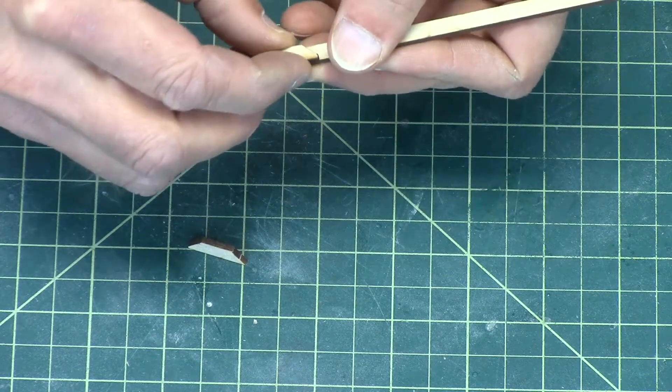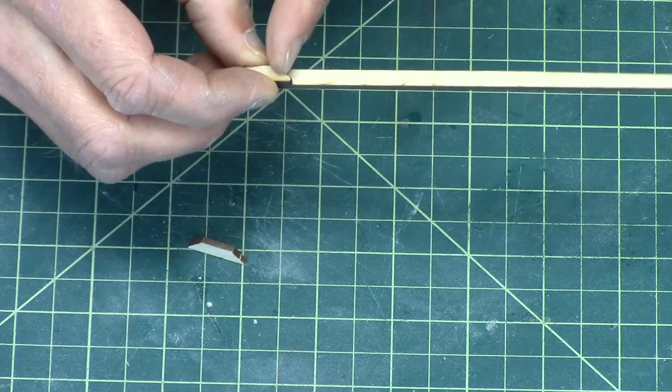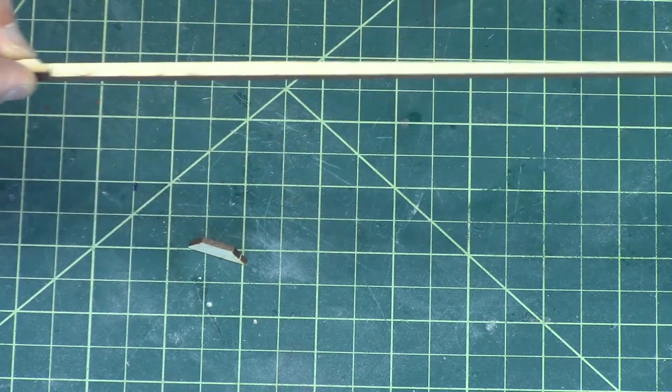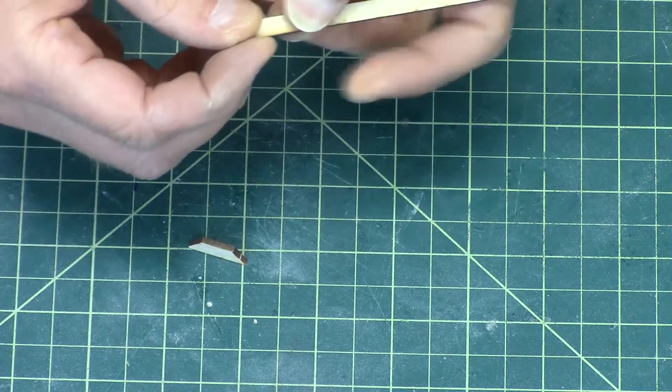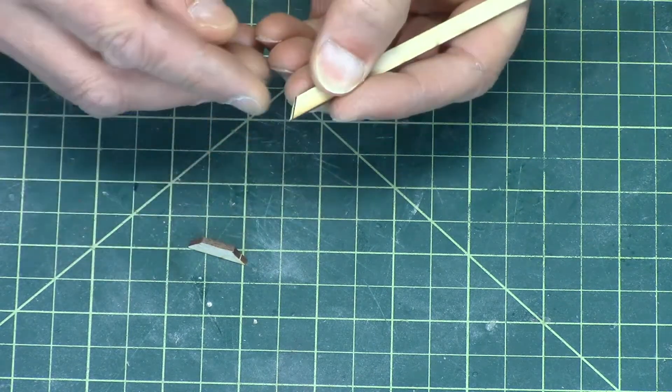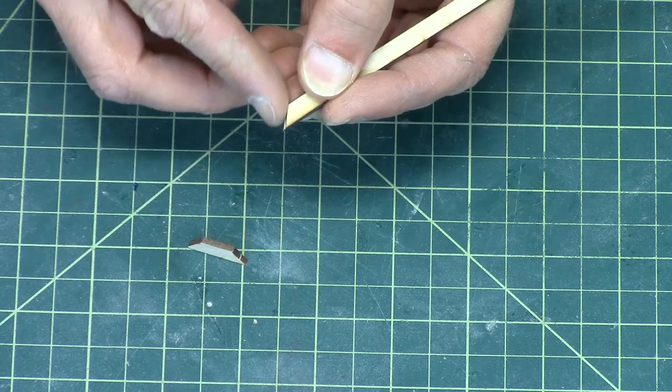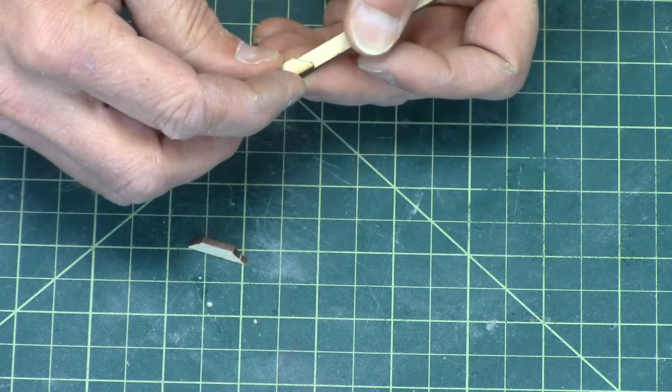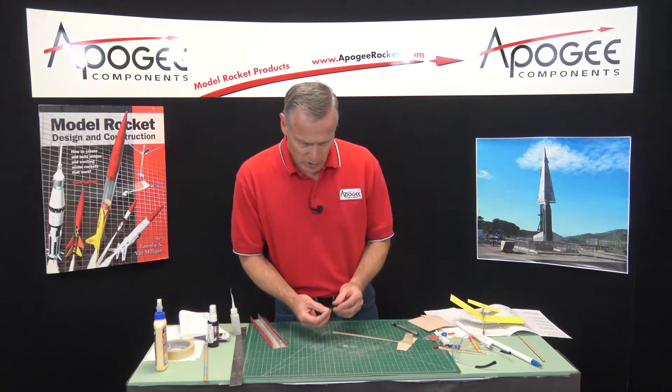See the part with the rounded edge? That's going to go towards the fins on the back end, and it's going to be aligned in the front with this front edge of the fuselage boom. That's how we want to glue it on.